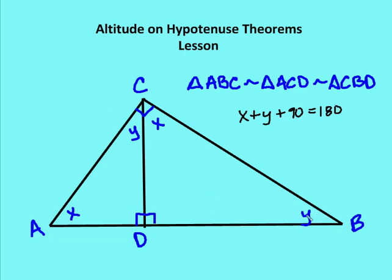If angle B is Y and angle CDB is 90 degrees, then angle DCB must be X, because X plus Y plus 90 degrees is equal to 180 degrees. So angle DCB is equal to X. In the same way, angle ACD is equal to Y. We know angle A is equal to X, angle CDA is 90 degrees, and X plus Y plus 90 degrees equals 180 degrees. So by creating altitude CD to hypotenuse AB, we've created three similar right triangles.